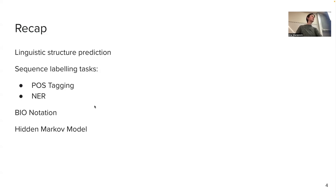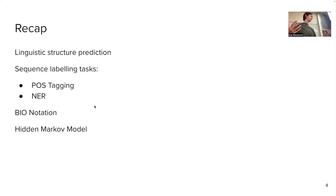The HMM is another model which needs labeled data — text where humans have annotated labels such as part-of-speech tags for each word. But it doesn't rely on representation learning, meaning the representation of text is not learned in an automatic data-driven way like with neural networks where you make a prediction based on learned representations.